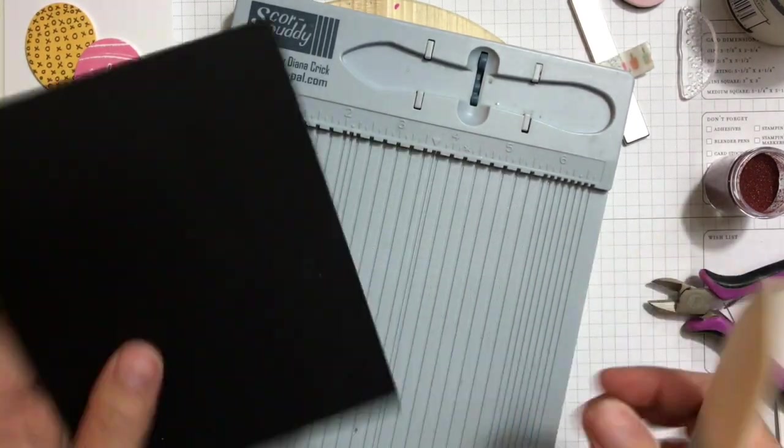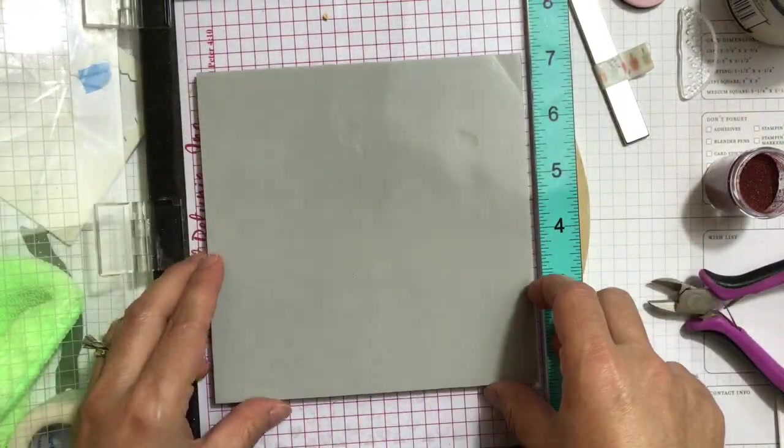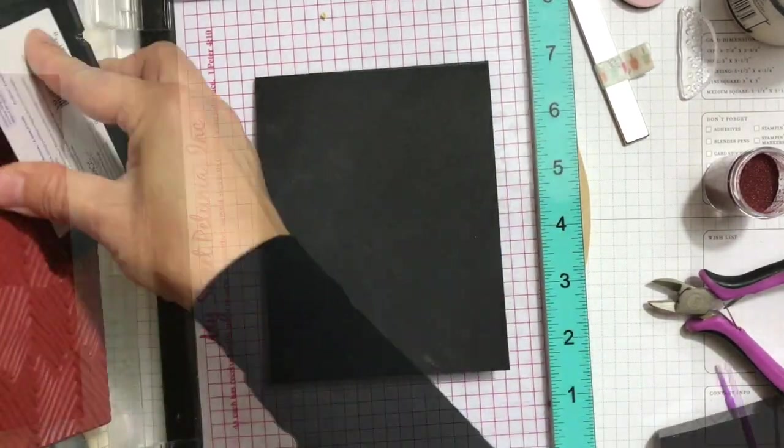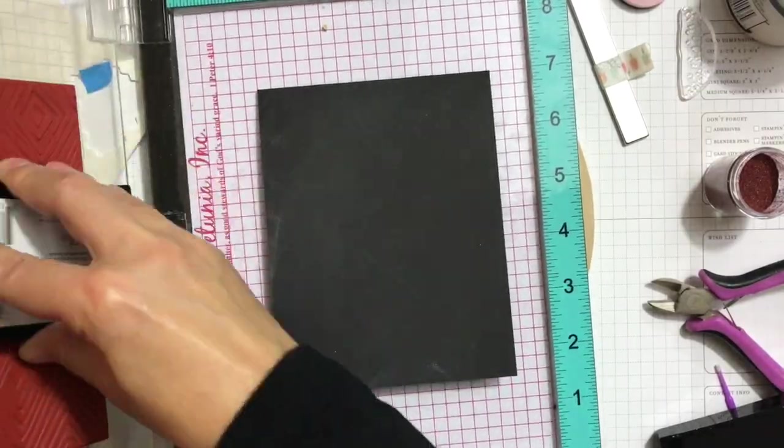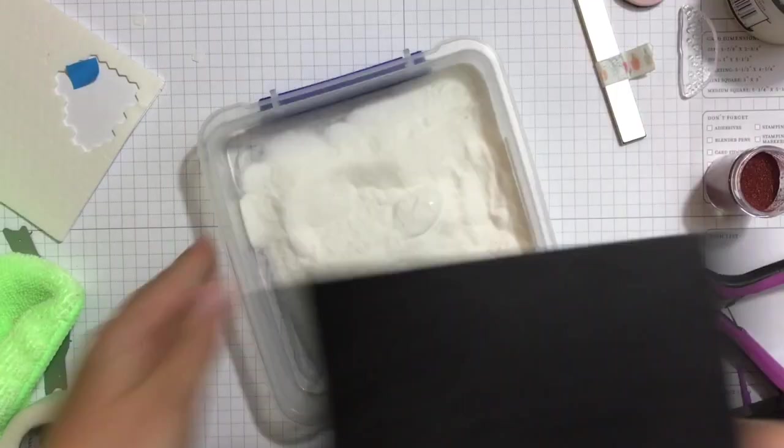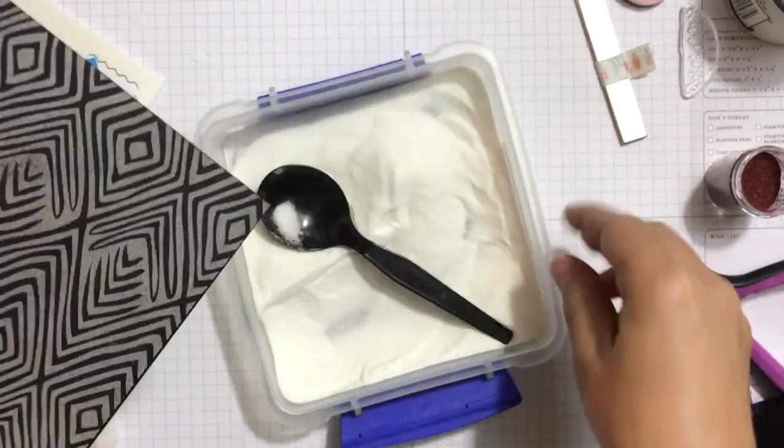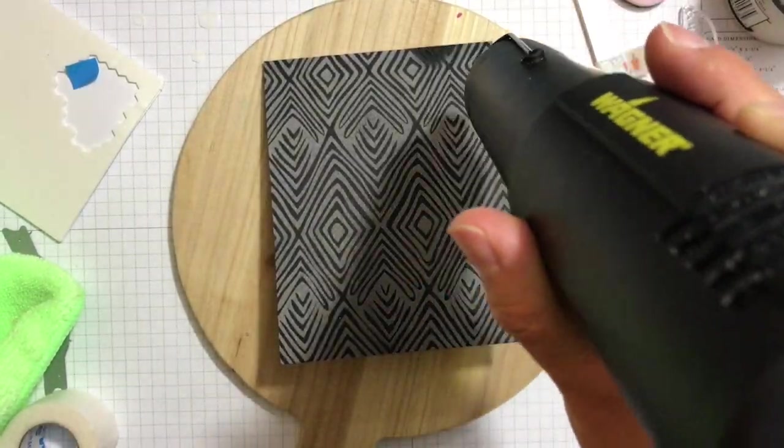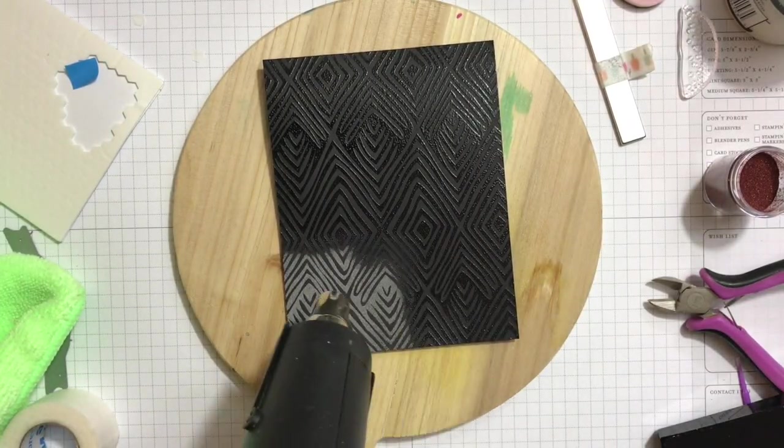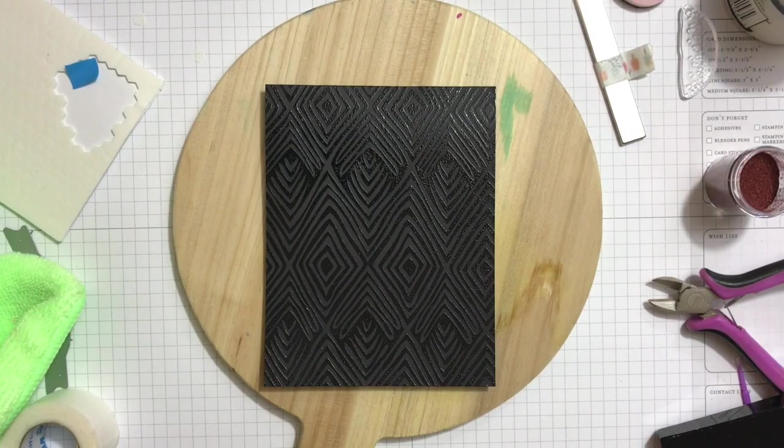Next I'm using the tribal print from Hero Arts, the bold print 6x6, to stamp on that background. So I'm using Versamark and my MISTI where I removed the foam pad that I had before. So you can see the Versamark there and I'm applying some ultra fine clear embossing powder from Hero Arts. So we're almost done here, I'm just quickly heat setting this. You can see how the embossing powder is melting and it gives a very nice cool background.